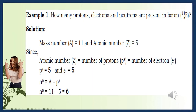Example 1: How many protons, electrons, and neutrons are present in boron, B-11-5? Solution: mass number A = 11, atomic number Z = 5. Since atomic number Z equals number of protons: p⁺ = 5 and e⁻ = 5. Number of neutrons n⁰ = A minus p⁺ = 11 minus 5 = 6.